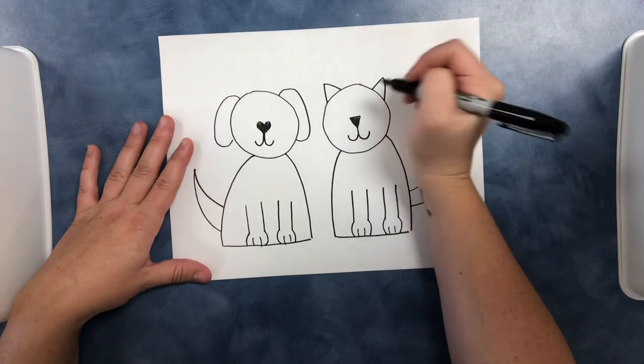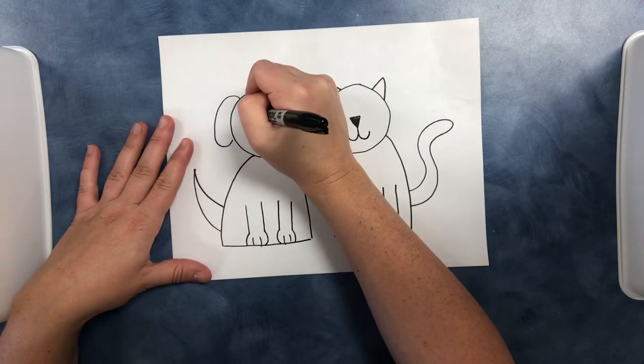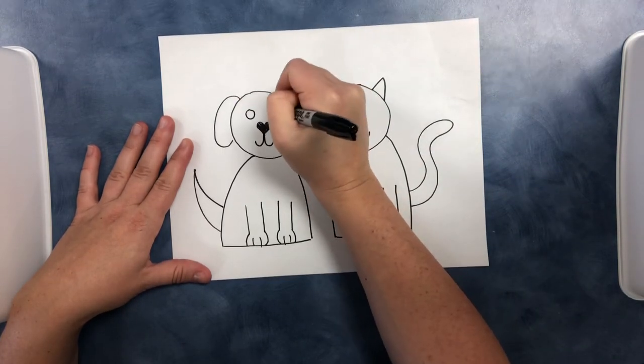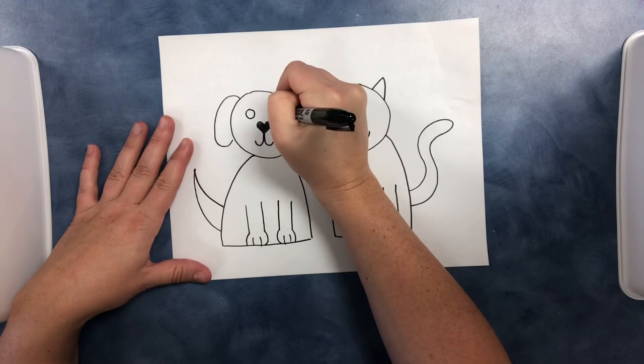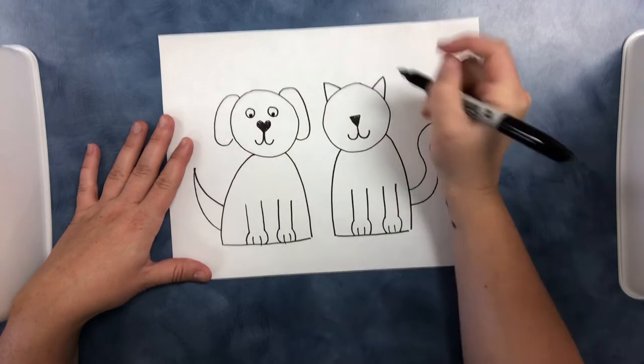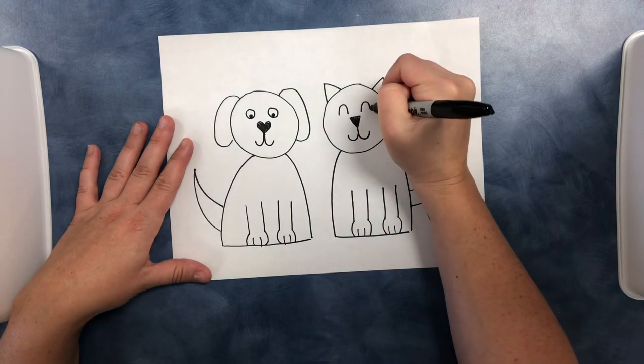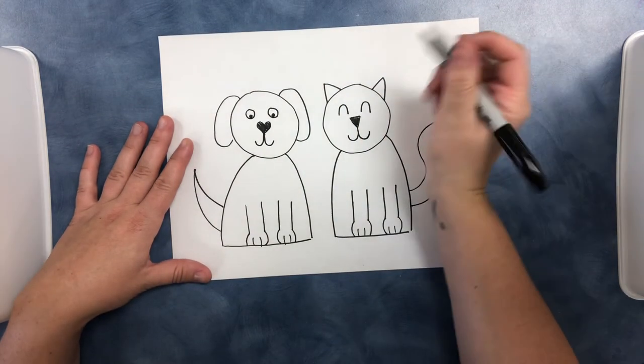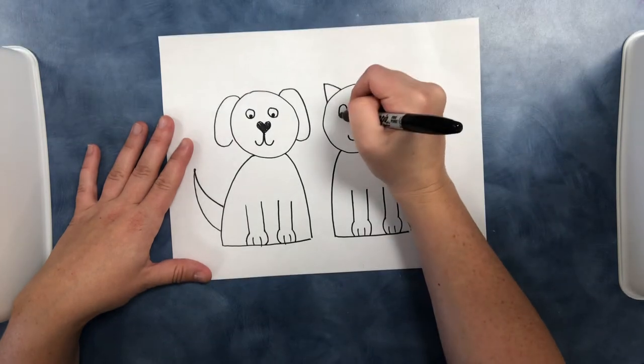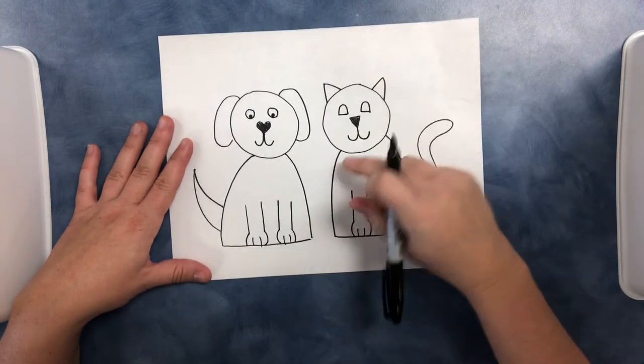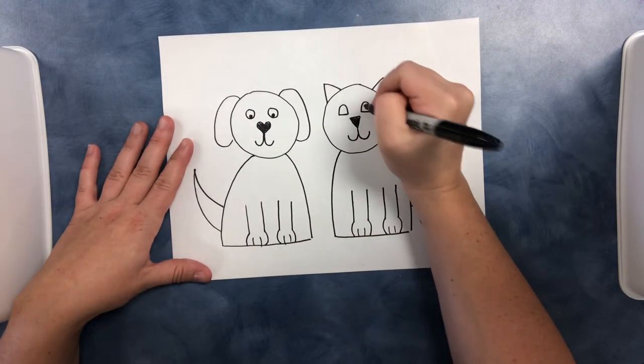And last but not least let's add some eyes. We can do circle eyes like this with a little pupil in the inside, or you could do a rainbow line and a rainbow line. You could make him look like he's laughing or his eyes are closed, or you could draw that line across just like we did for the body and draw your pupil.